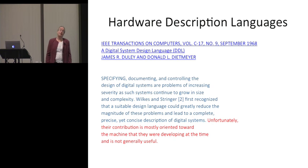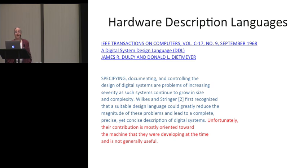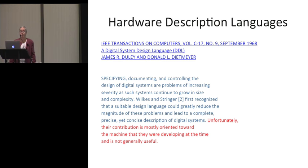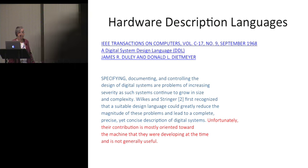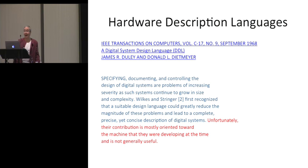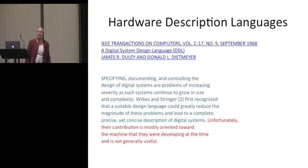I found a paper from 1968 which starts nicely. It says: 'Specifying, documenting, and controlling the design of digital systems are problems of increasing severity as such systems continue to grow in size and complexity. Wilkes and Stringer first recognized that a suitable design language could greatly reduce the magnitude of these problems and lead to a complete, precise, yet concise description of digital systems.' And then the next sentence was: 'Unfortunately, their contribution is mostly oriented towards the machine they were developing at the time and is not generally useful.' Papers were snarkier in the 1960s.